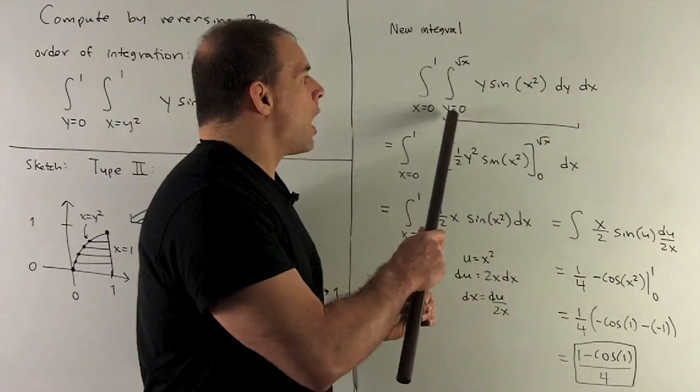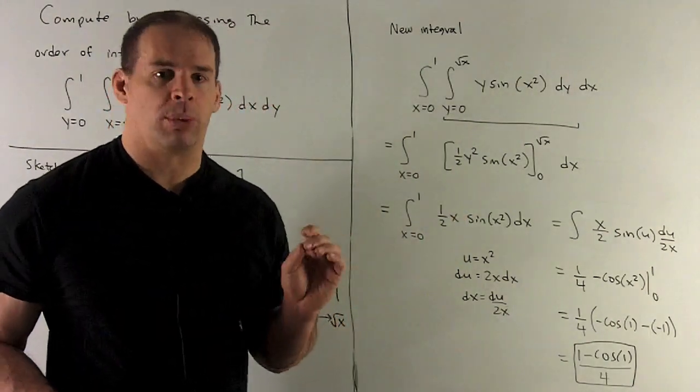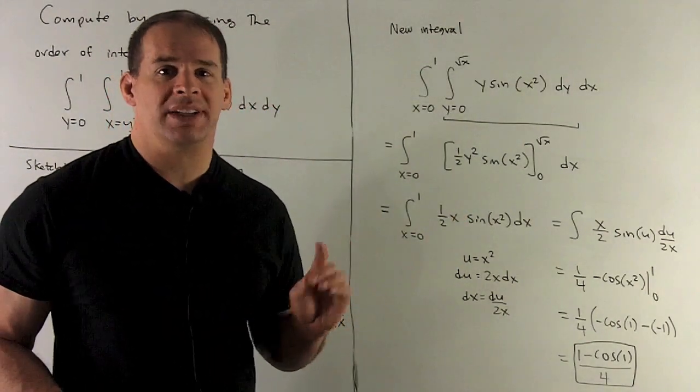For the inside integral in y, we're taking the antiderivative of y, which is one-half y squared. No problem. Put our limits in and take the difference.